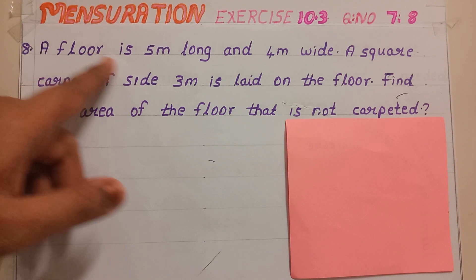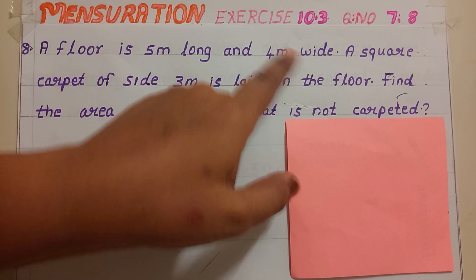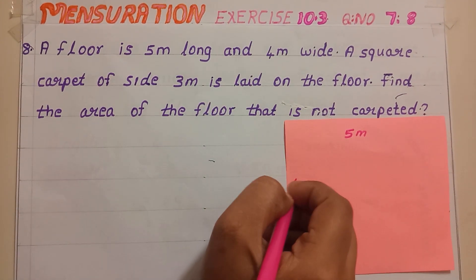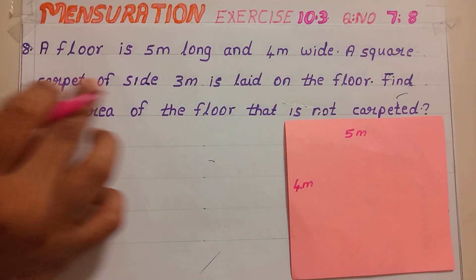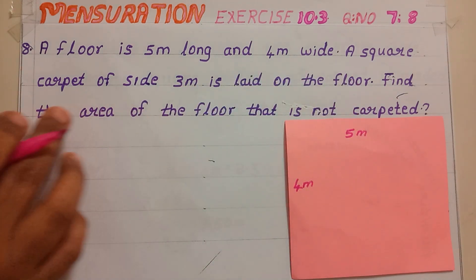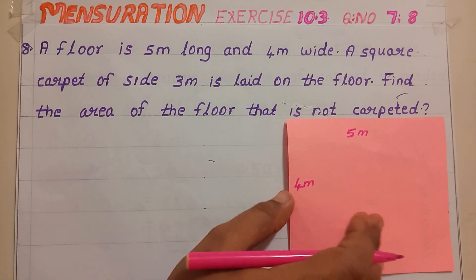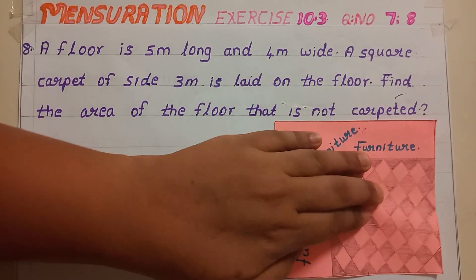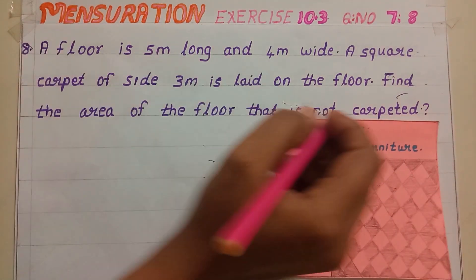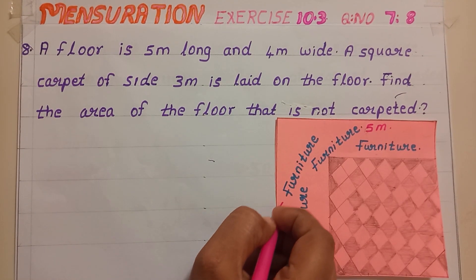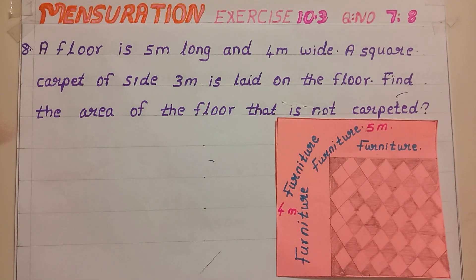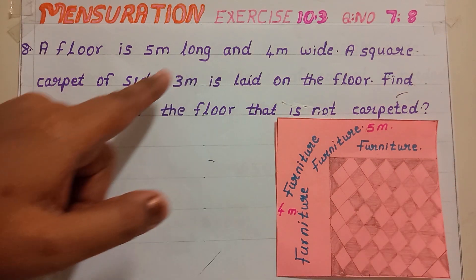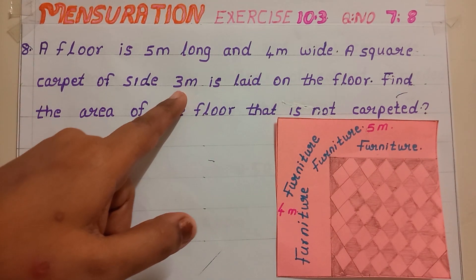The next question says that a floor is 5 meter long and 4 meter wide. This is our room — 5 meter is the length and 4 meter is the breadth. A square carpet of size 3 meter is laid on the floor. This is our square carpet. Its length and breadth are both the same because it is a square.